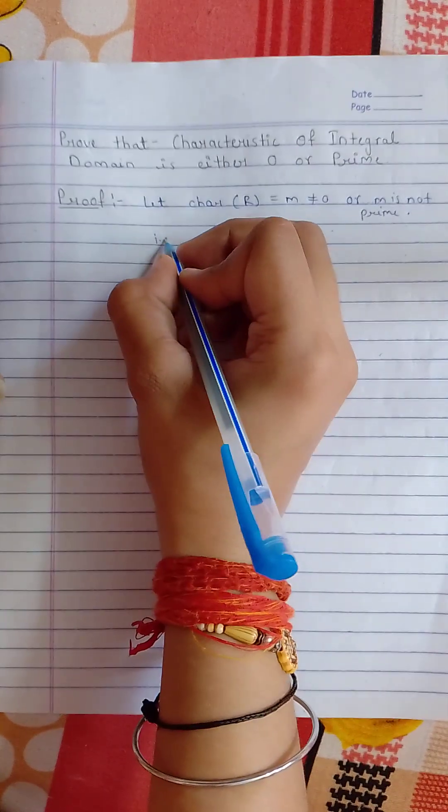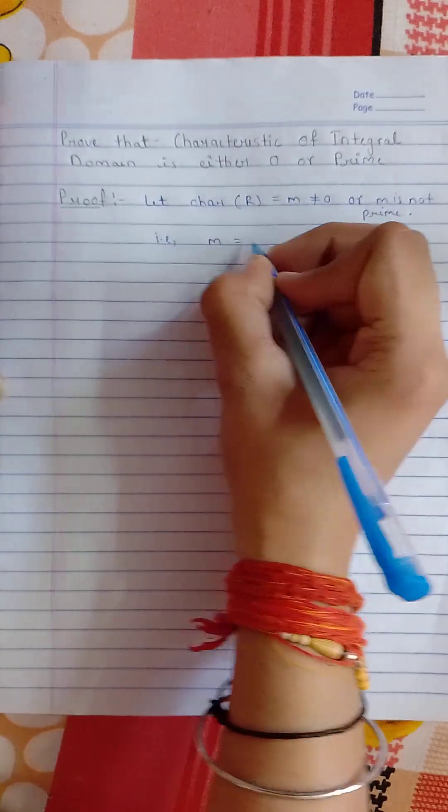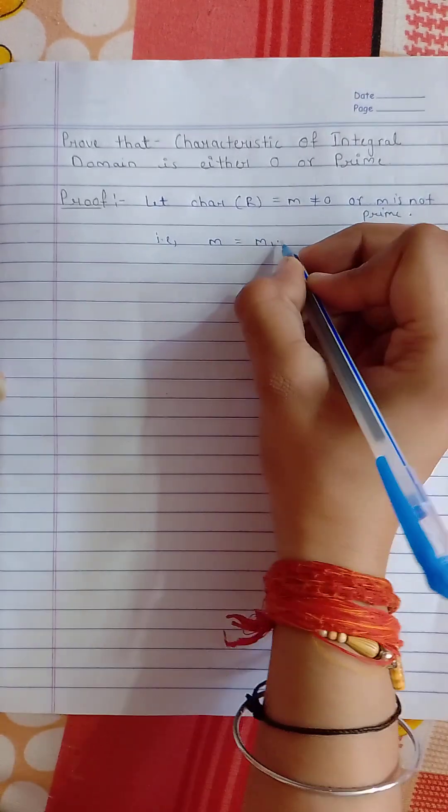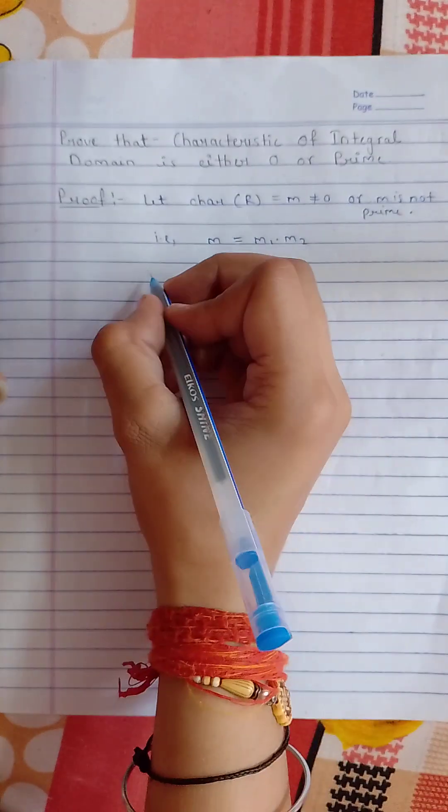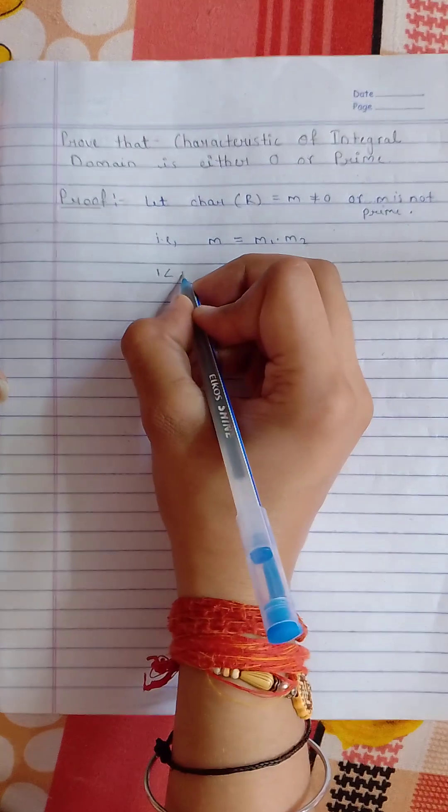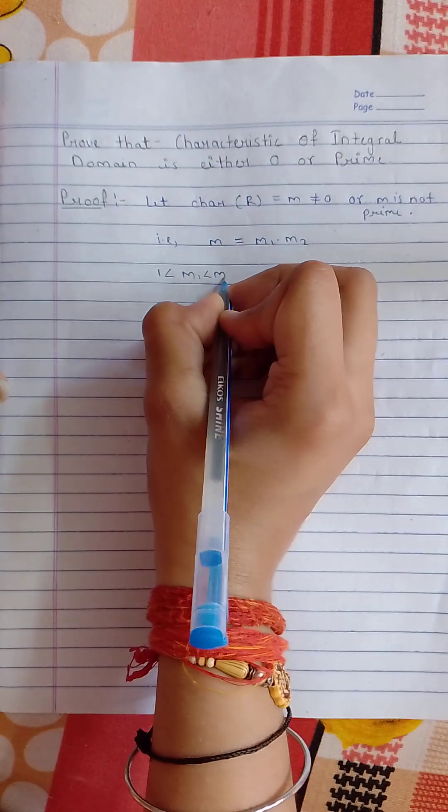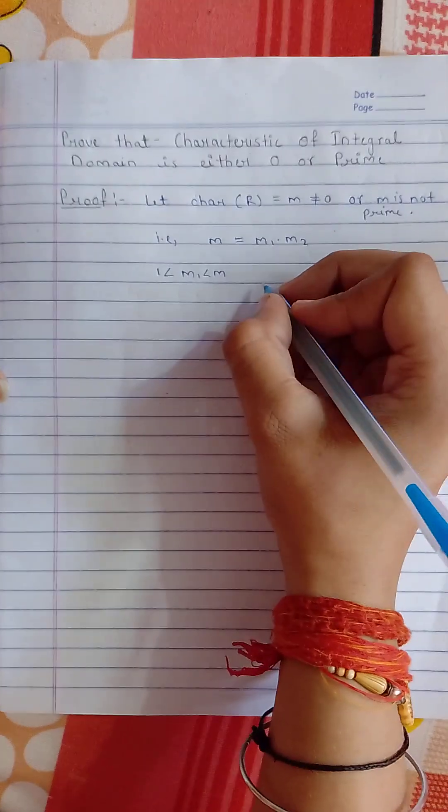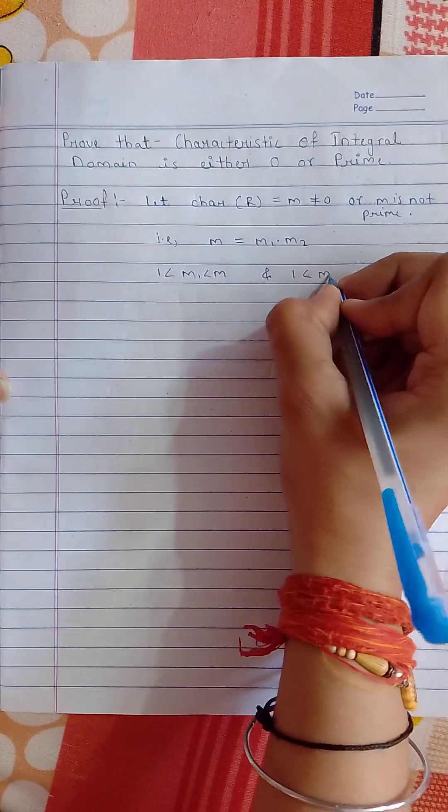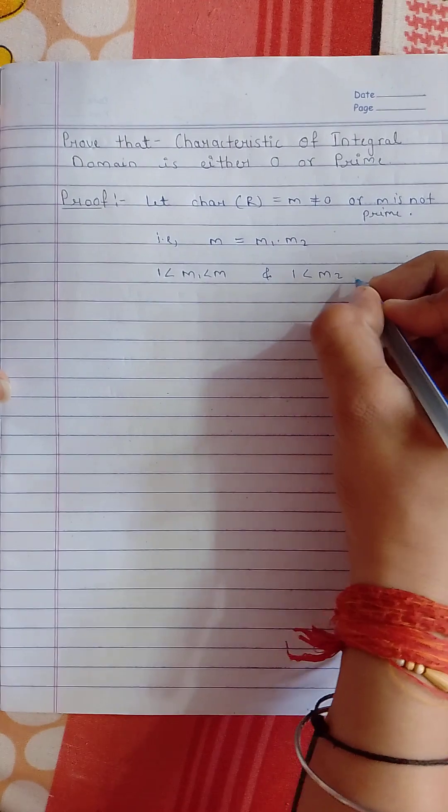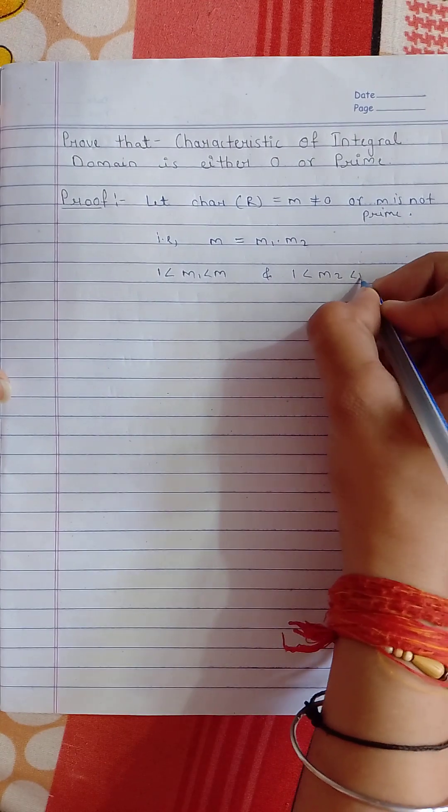That is, if m is not prime, then we can write m as m1 times m2, where m1 is greater than 1 and less than m, and m2 is also greater than 1 and less than m.